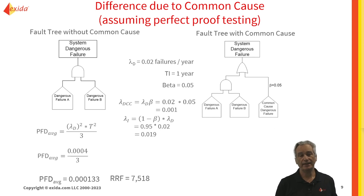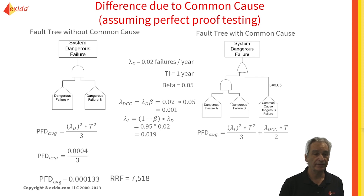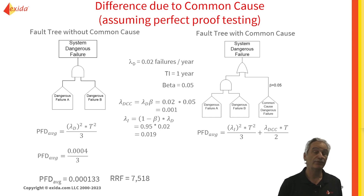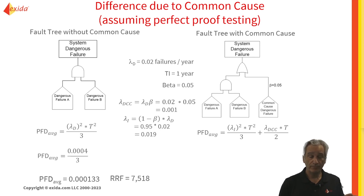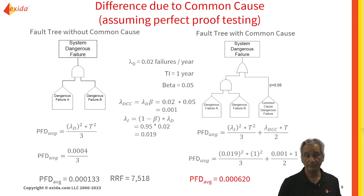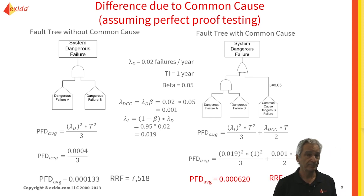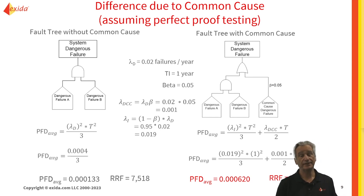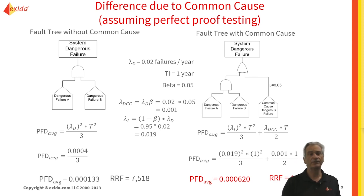Now on the right-hand side, the AND part is again lambda_d squared times t squared over 3, but now we have to add in the PFD average for the common cause, which will be lambda_CC times t over 2. If we plug in our numbers and do the math, we end up with a PFD average of nearly six times more than we had before, which means our risk reduction factor is almost six times less. And this is using only a 5% beta — if we were to use 10%, the gap would be even wider.